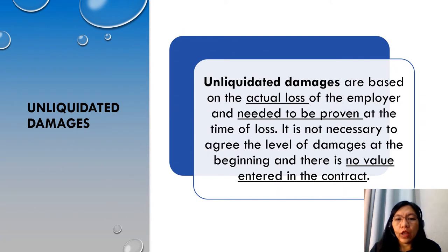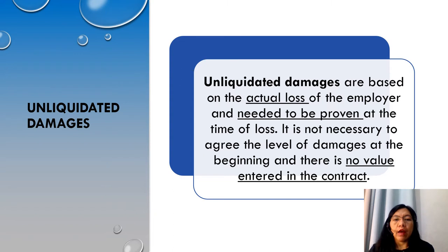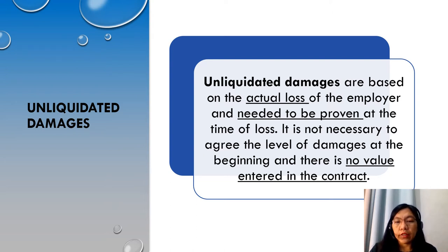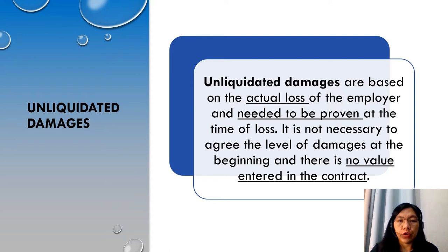The first is unliquidated damages. These damages are based on the actual loss of the employer and need to be proven at the time of loss. It is not necessary to agree the level of damages at the beginning or during the signing of the contract, and there is no value entered in the contract. The disadvantage of unliquidated damages is that the amount can be subject to lengthy discussions and calculations that may not result in agreement by both parties, as contractors and employers are expected to have different positions.